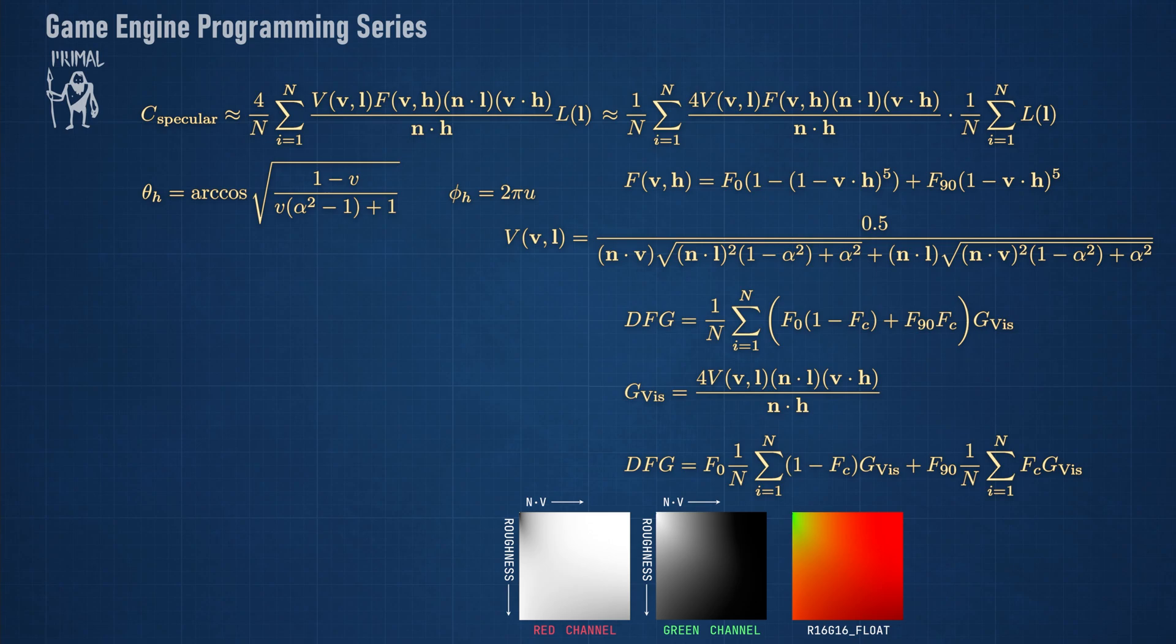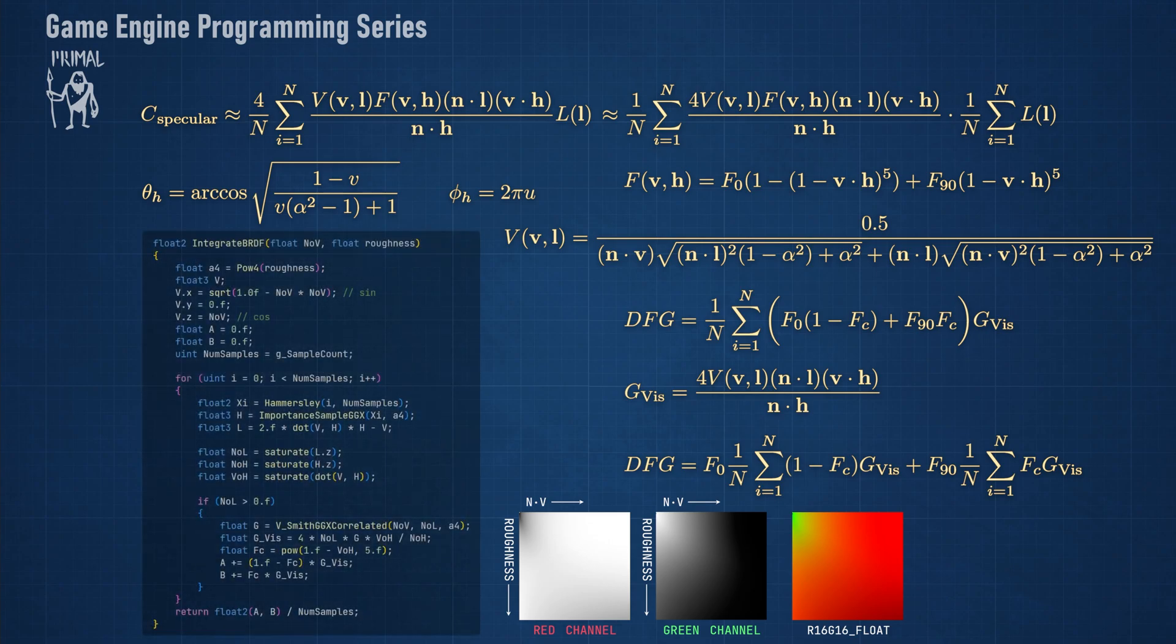We'll not implement this part of the specular pre-filtering in this episode, since I have to set up the editor to handle default assets like this that only get generated once. But we can already have a look at the shader code, which is again similar to what we have seen so far.